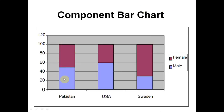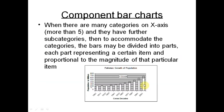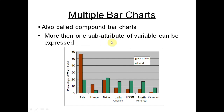A component bar graph represents different categories in a vertical fashion as proportions adding to 100%. For example, for Pakistan, USA, and Sweden, it shows the proportion of males and females. The bars are divided into parts, each part proportional to the magnitude of that item. Multiple bar charts show different attributes of the same variable side by side.